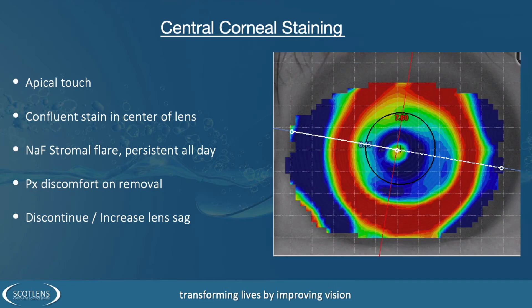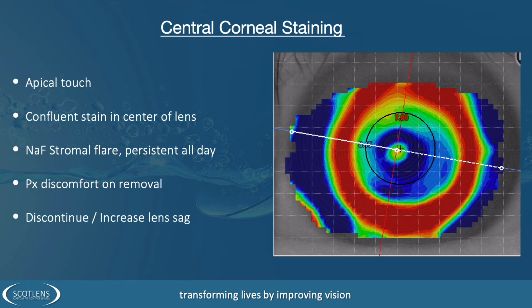This will also be revealed in topography — you'll quite often see a very small defined central high spot, this area here. This differs from a central island, which is usually caused when there's too much sag of the contact lens and we get an undercorrection. This small defined stain will be visible on your tangential curvature standard scale image.